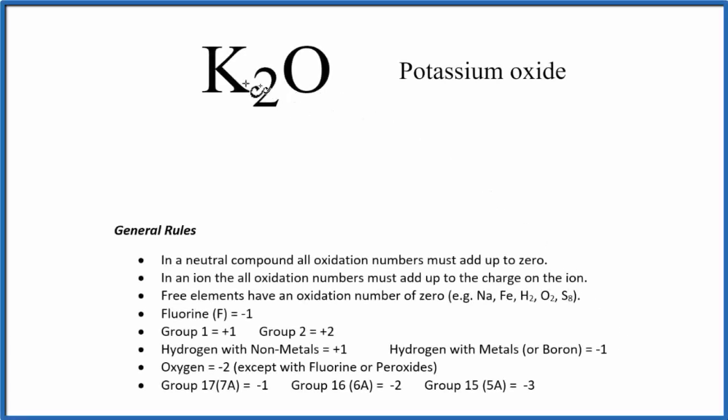In this video, we'll find the oxidation numbers for K2O. That's potassium oxide. Potassium oxide here, this is a neutral compound. There's no charge written up here like you'd see with an ion.